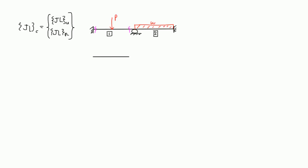If we cut element 2 here and here and drew out the element, it would look something like this. When we draw our loading, we have P on element 1 and the uniformly distributed load on element 2. We treat these elements as fixed beams — fixed end beams. When we draw the joint load diagram, the end reactions — the vertical shears and the moments — are drawn in the direction of the loading or the direction that causes the bending.